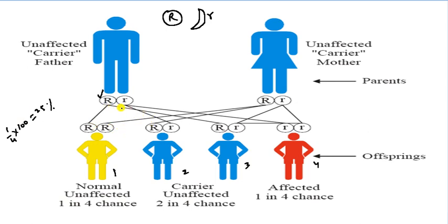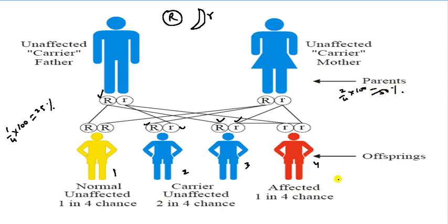When capital R comes from one parent and small r from the other, that is carrier unaffected — a 2 in 4 chance, which is 50%. When both are small r, the individual is totally affected by sickle cell — a 1 in 4 chance, which is 25%. So the distribution is: 25% normal unaffected, 50% carrier unaffected, and 25% sickle cell affected.